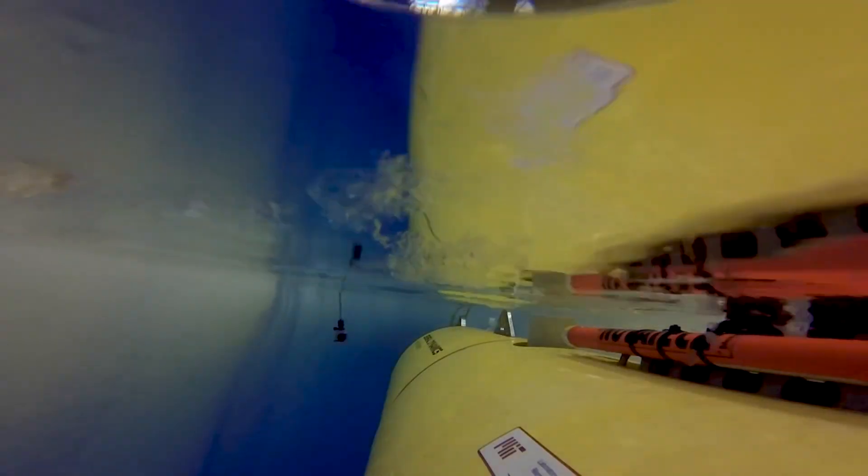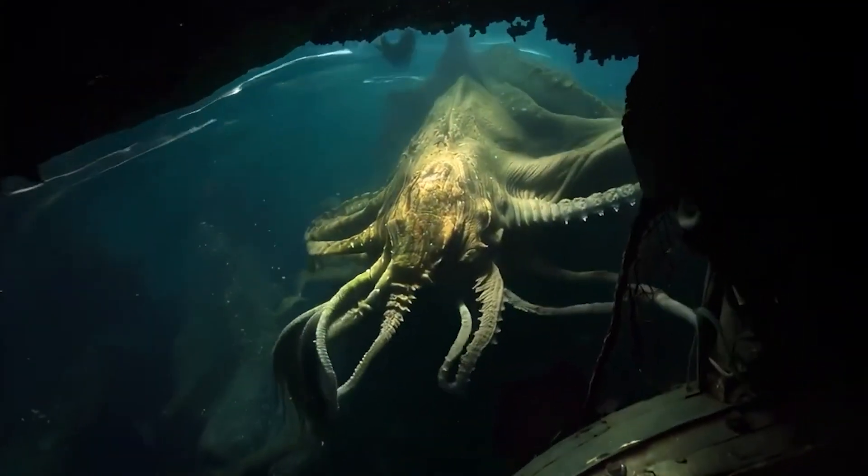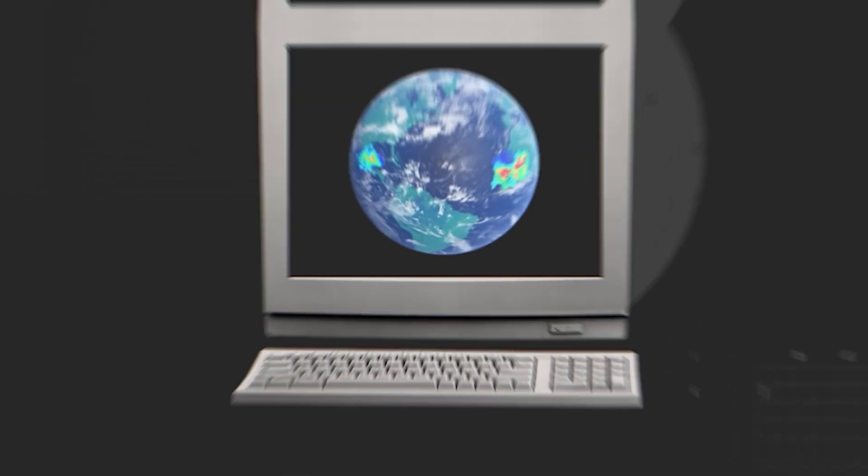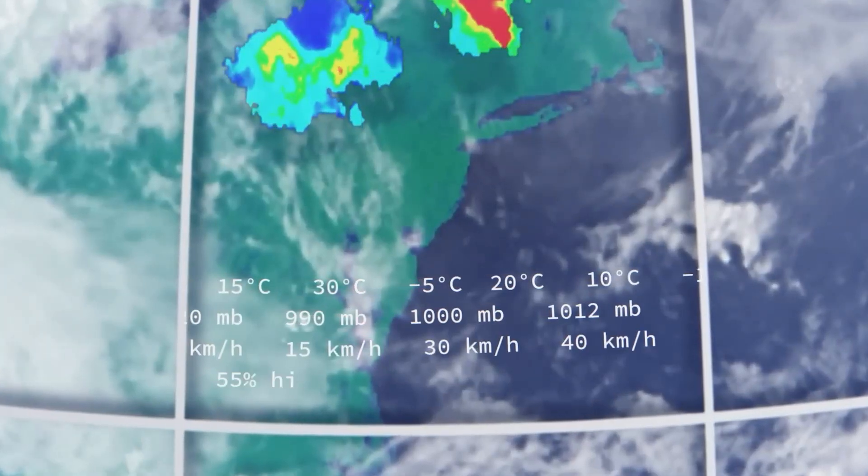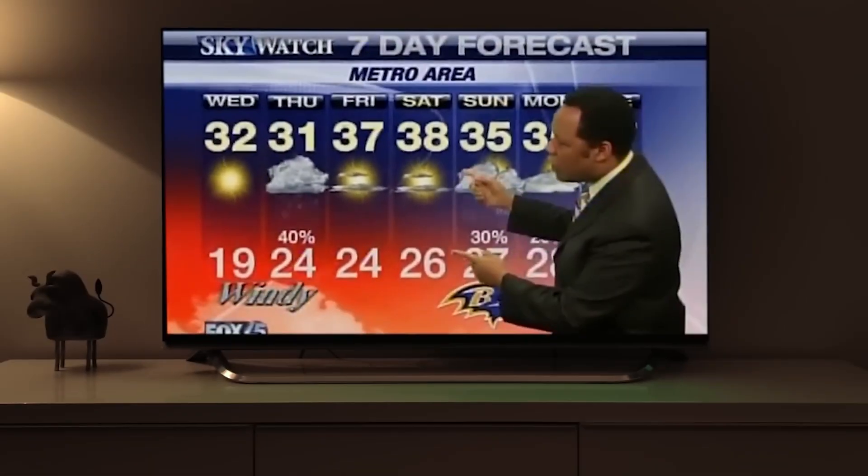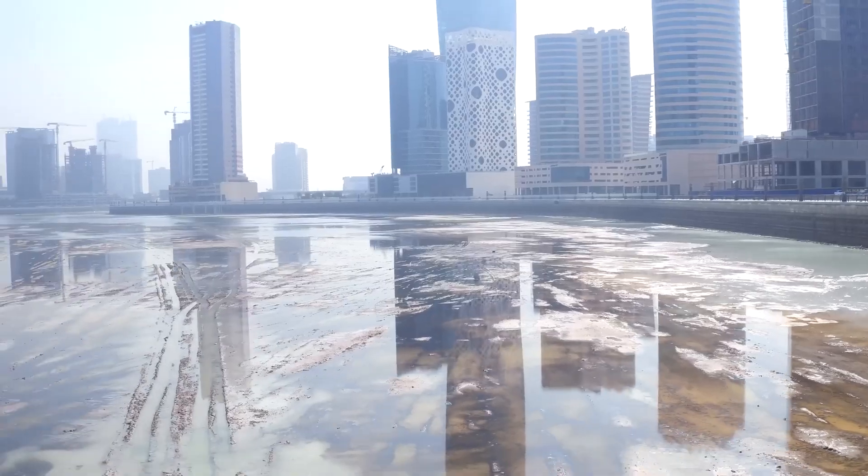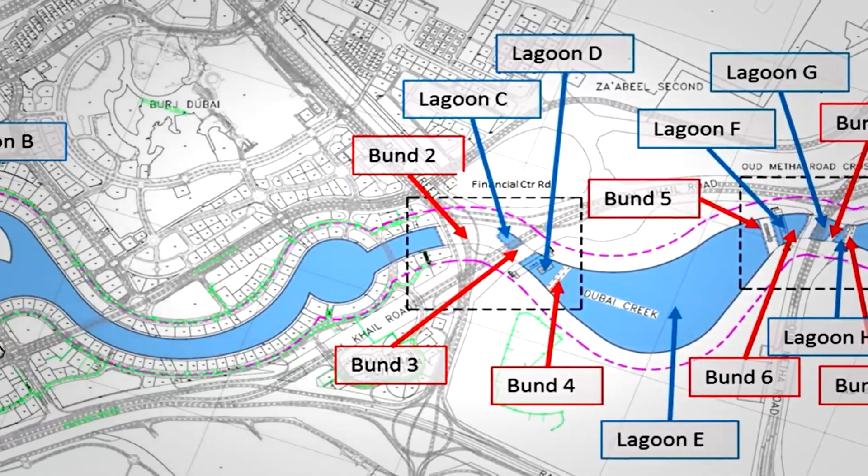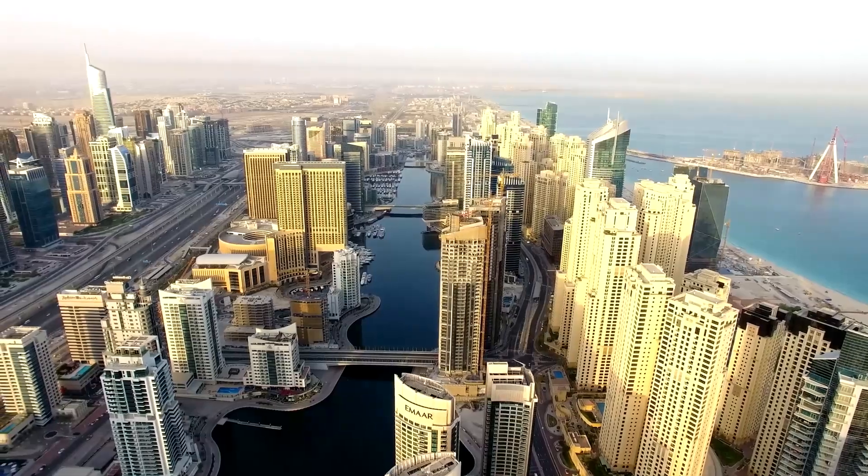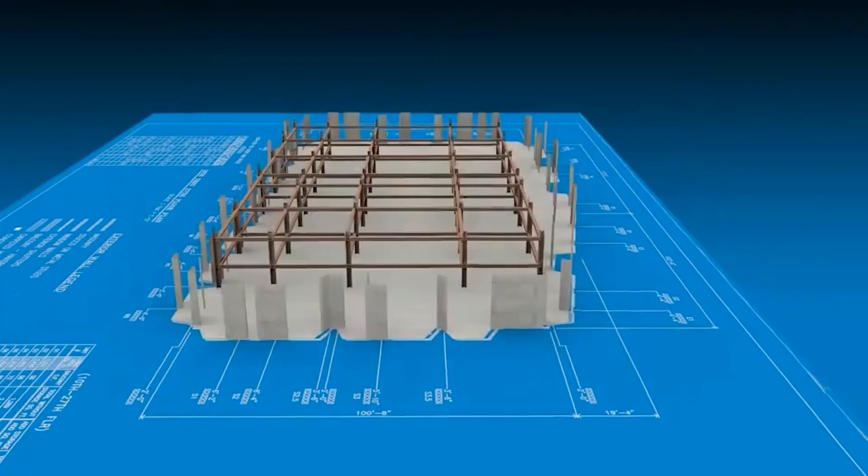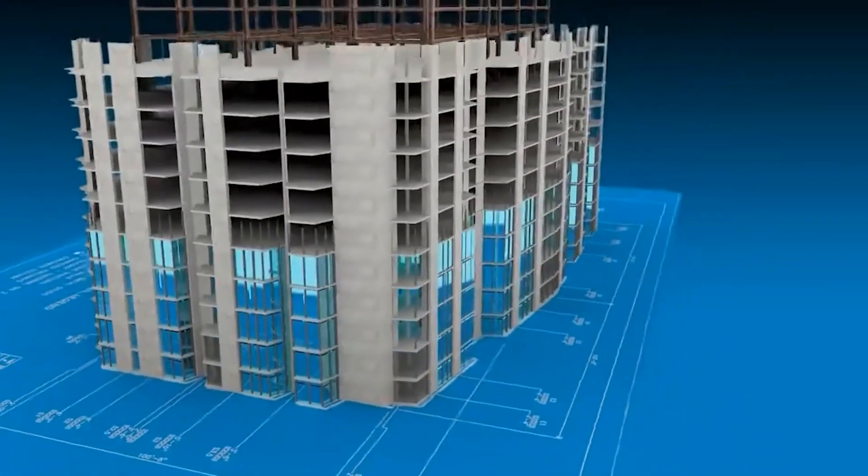Deep beneath the oceans, AI-powered robots are discovering new species and mapping underwater mountains. In the skies above, AI weather prediction systems now forecast storms with 89% accuracy six days in advance, giving us crucial extra hours to prepare for natural disasters. In construction sites across Dubai, AI algorithms analyze thousands of designs to create buildings that use 50% less energy. The AI doesn't just draw blueprints, it thinks in 3D, considering everything from sunlight angles to wind patterns.